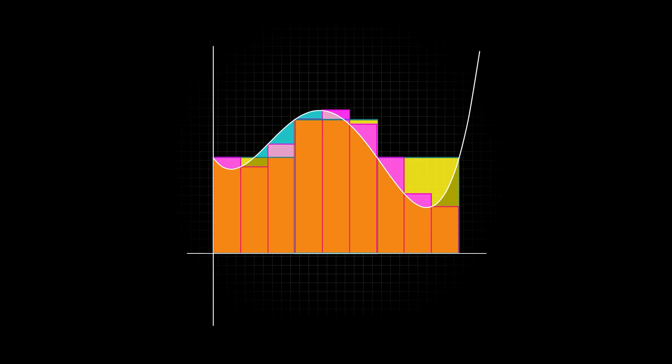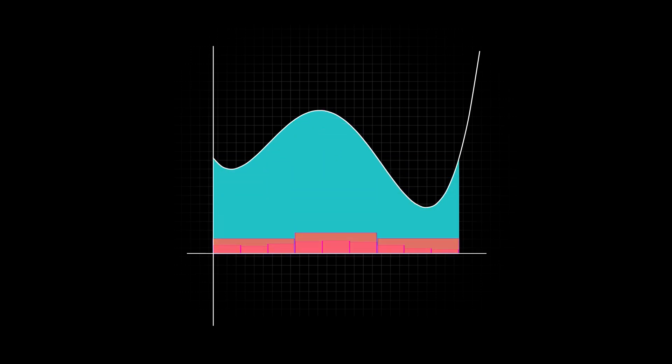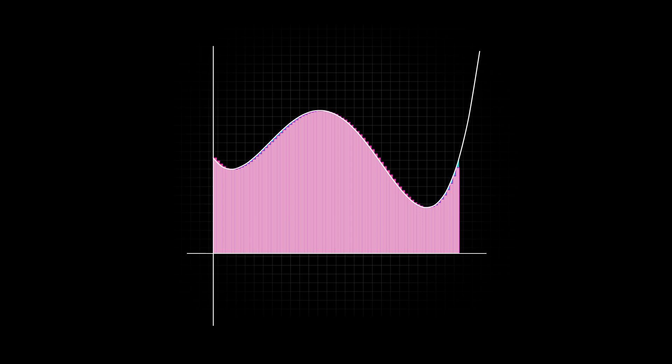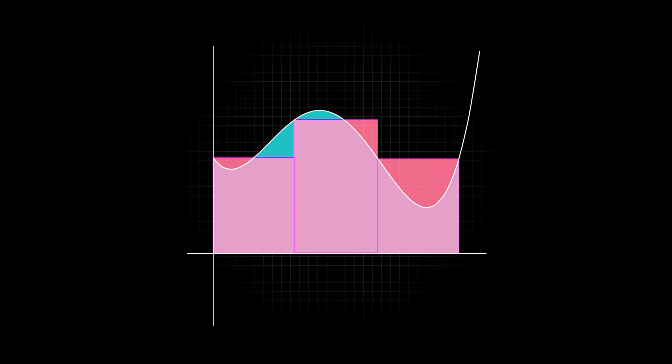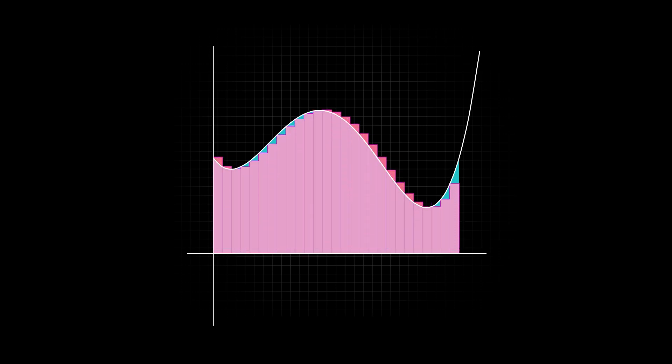So what if we use even more? We can see that as we increase rectangles, the estimate gets better and better. Just like the method of exhaustion, then, the key here is to take the limit of this process as the number of rectangles goes to infinity. The width will go to zero, which means we will be counting only the area we want—no more, no less. This is how we get an exact area, at least in theory.